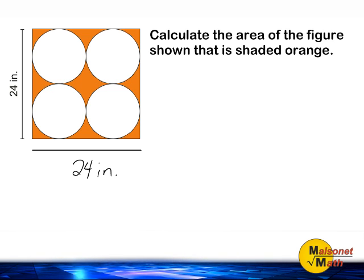To figure out how to solve this problem, we should imagine that the entire square was originally shaded orange and then someone came and erased four sections the size of a circle. What we have left over is the orange shaded part.